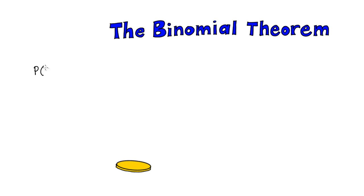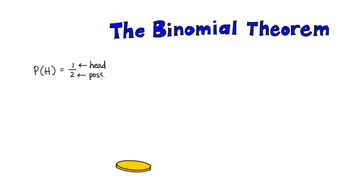Let me ask you a question. What's the probability, if you flip the coin once, of getting a heads? Well, since there are two sides, the probability is one out of two, meaning you get one head out of two possible outcomes: heads or tails.